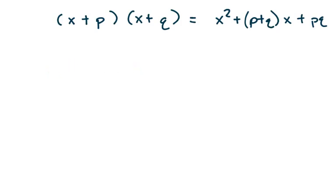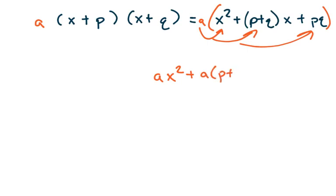So this is useful, but what we normally have is we also have an a term in front. So what the a term means is that the leading coefficient doesn't always have to be 1. It could be some other value, which we'll call a. So what I can do here is if I distribute this a into each of these, we get ax squared plus a times p plus q, x plus apq.